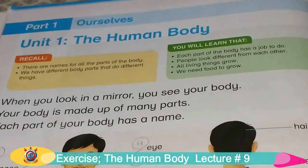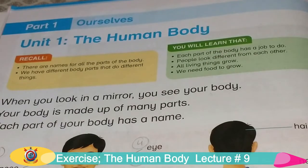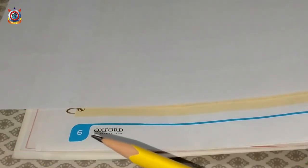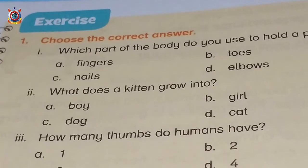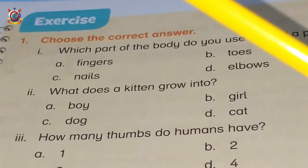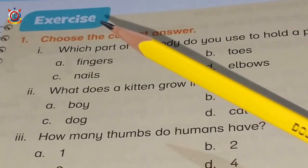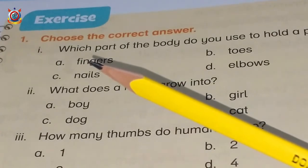As you all know, we have just completed Unit 1, The Human Body, in the previous class. Now we will do the exercises of this unit. All of you please open page 6. On page 6 you can see what is written here — Exercise. Now we are going to attempt different exercises related to Unit 1.